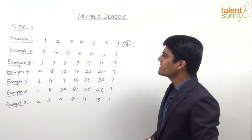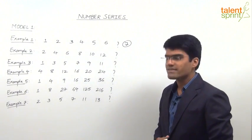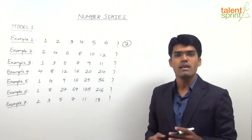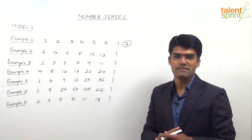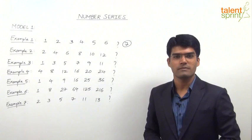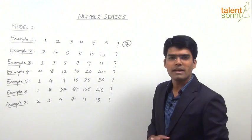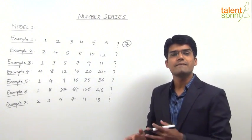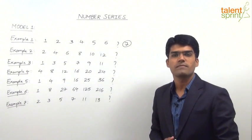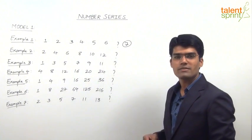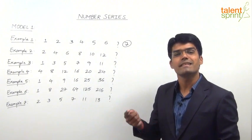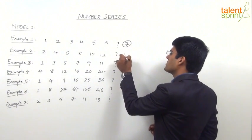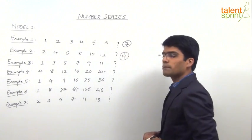The second example is 2, 4, 6, 8, 10, 12, and question mark. Again, we need to find what comes in place of the question mark. This is an even number series consisting of consecutive even numbers. So the number after 12 has to be the next even number, which is 14. The answer for question number 2 is 14.